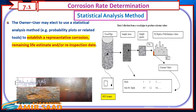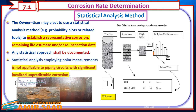Statistical Analysis Method: The owner or user may elect to use a statistical analysis method — for example, probability plots or related tools — to establish a representative corrosion rate, remaining life estimate, and/or re-inspection date. Any statistical approach shall be documented. Statistical analysis employing point measurements is not applicable to piping circuits with significant localized unpredictable corrosion.